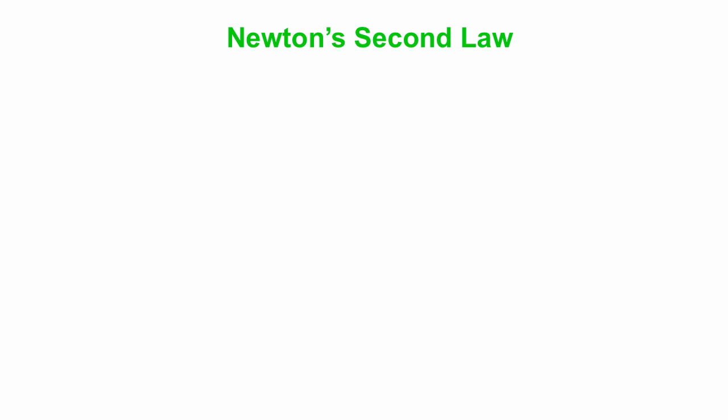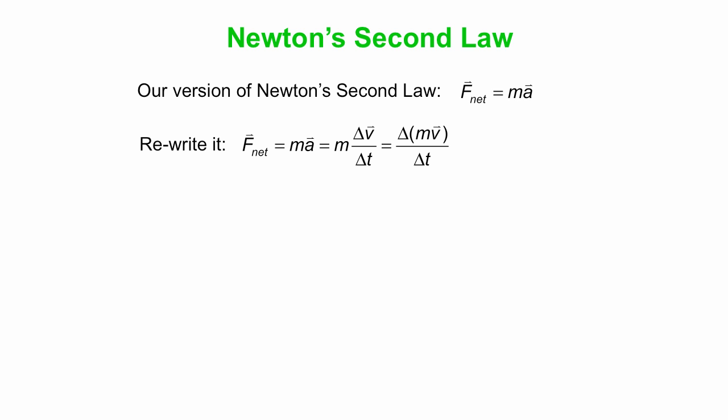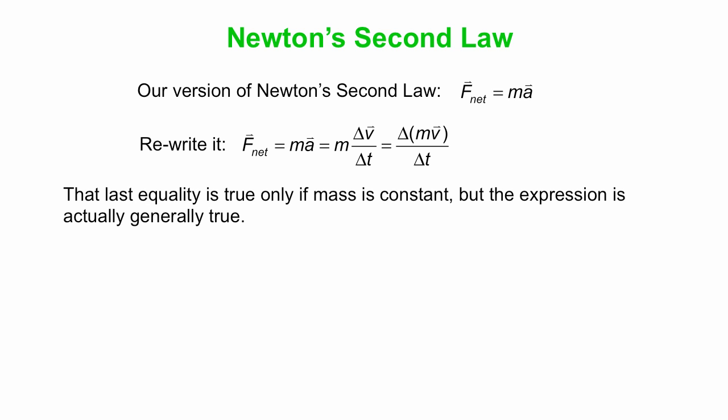Let's go back and think about Newton's second law. We wrote this down: the sum of all forces, the net force, is ma. We can rewrite it more like Newton wrote it in the first place. So a we can write as Δv over Δt. Instead of m times Δv, we're going to write that as Δ(mv). We can get away with that only if the mass is constant, but it turns out that last expression, F_net = Δ(mv)/Δt, is generally true, and that's the way Newton